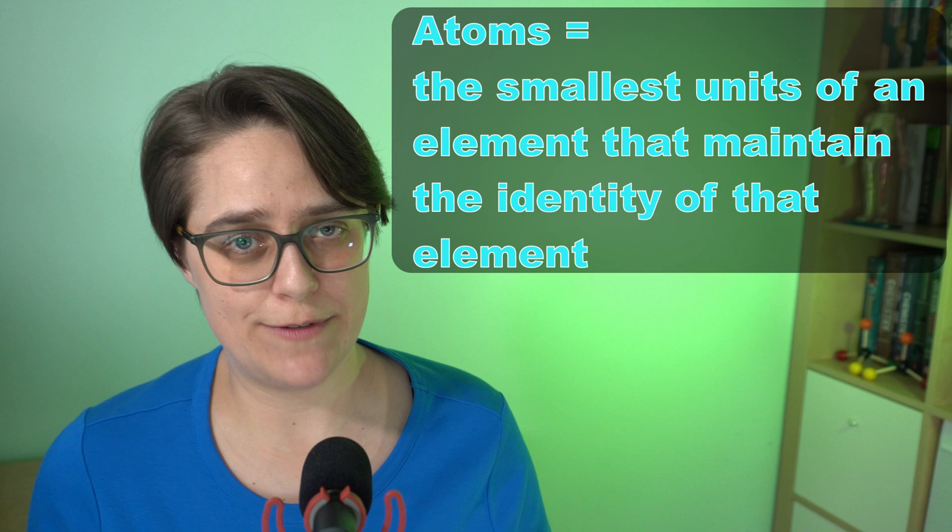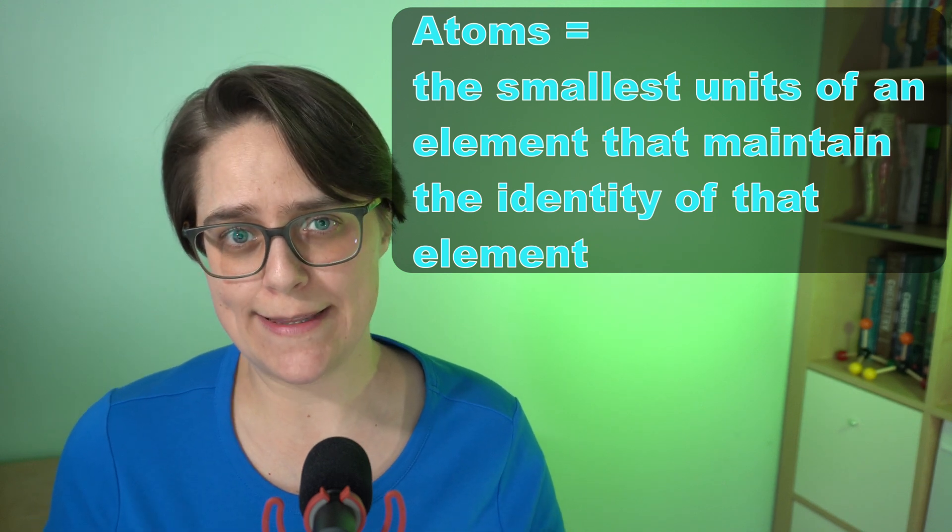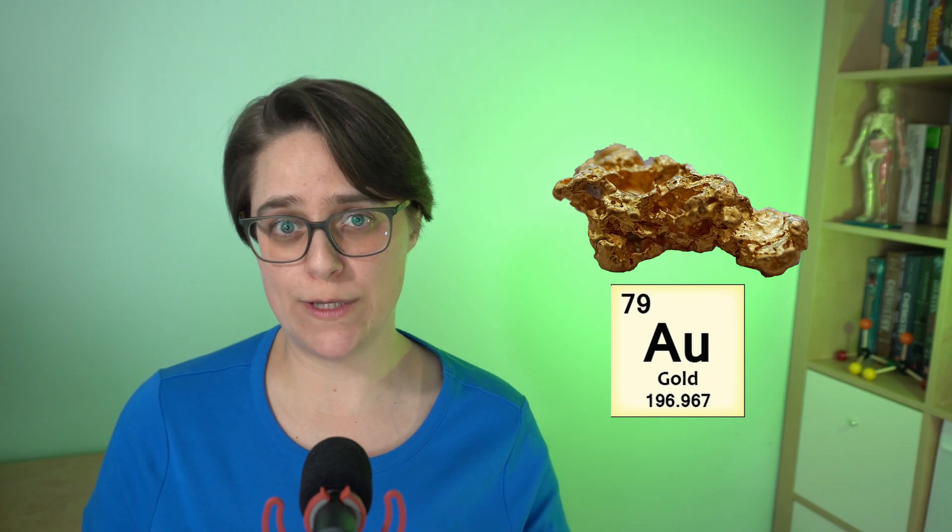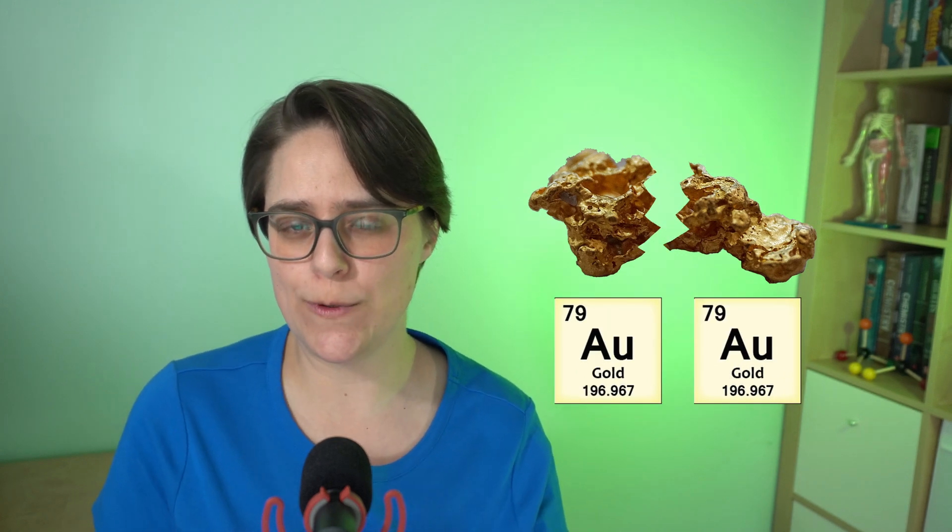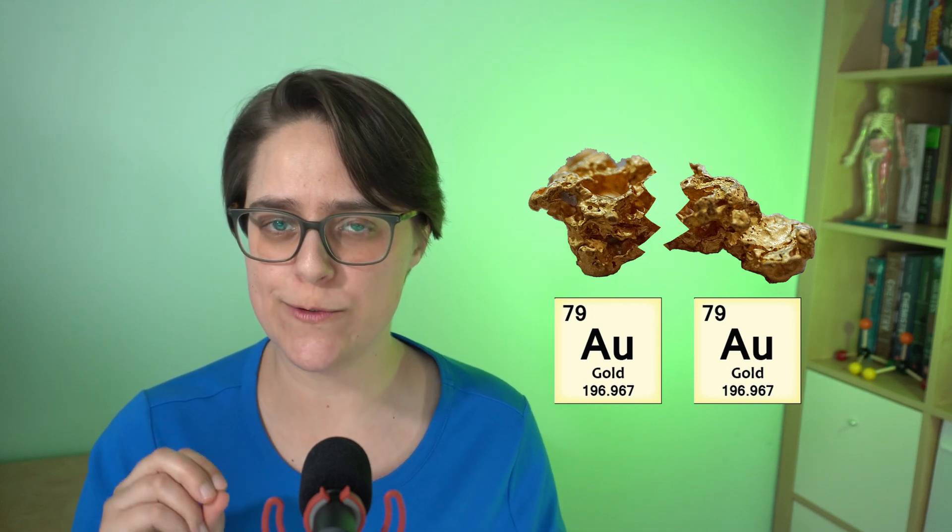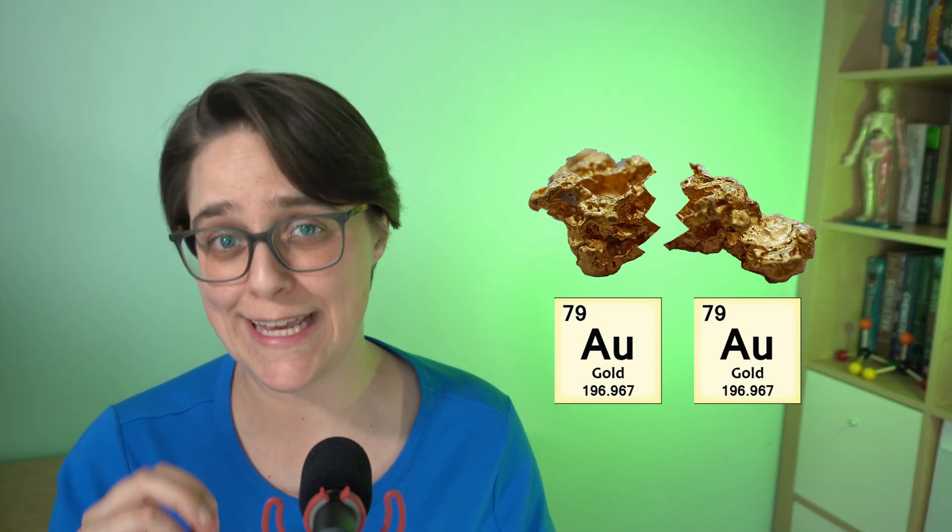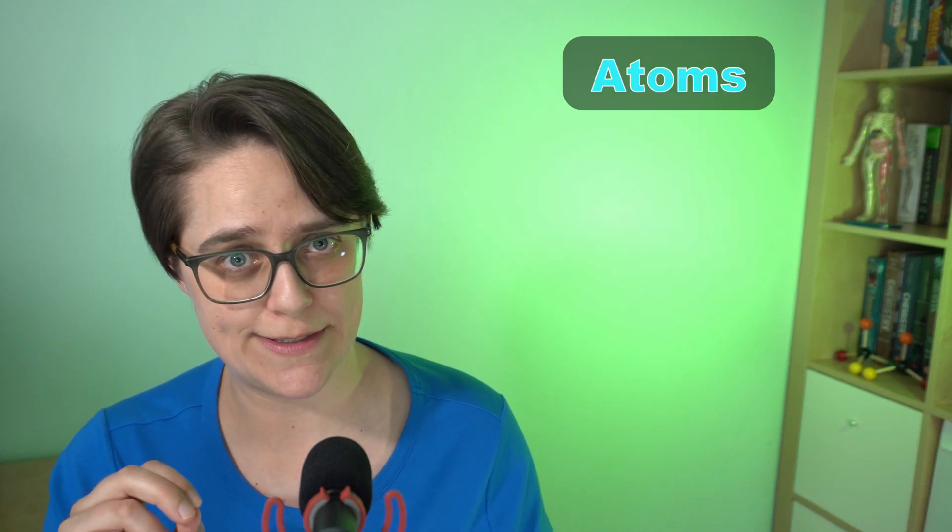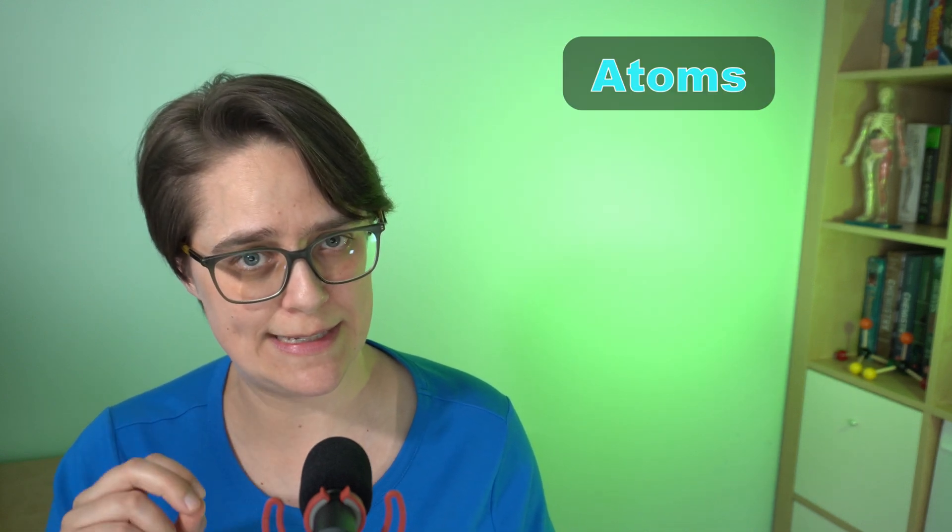Atoms are the smallest units of an element that maintain the identity of the element. If you have a big chunk of gold and you cut it in half, you now have two smaller chunks of gold. But you still have gold. It retained its chemical identity. Atoms are not like this. If you cut a single atom in half, it changes its identity.